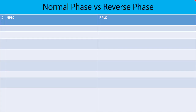The very first feature of normal phase liquid chromatography is that the stationary phase is more polar than the mobile phase. The stationary phase is more polar compared to the mobile phase, or you can say that the mobile phase is mostly non-polar in case of normal phase liquid chromatography.